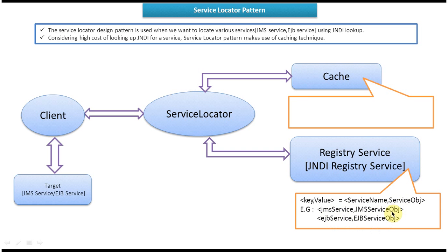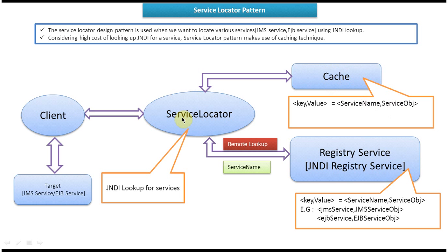Next we will see the cache. The cache is used in the Service Locator Design Pattern to improve performance. It is used to store the service object. Next is the Service Locator, which performs the remote lookup of the service object in the JNDI Registry using the service name.